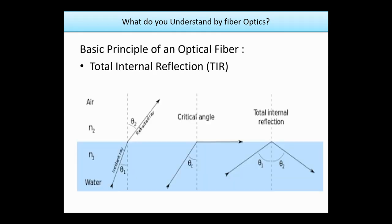Here we try to explain the diagram. The light is in the rarer medium; the incident angle is theta 1 and the refracted angle is theta 2. As we increase the incident angle, the refracted ray moves further from the normal. At a certain point, the refracted angle becomes 90 degrees — this angle is the critical angle. If we increase the incident angle beyond this, the light returns to the same medium in which it was incident.